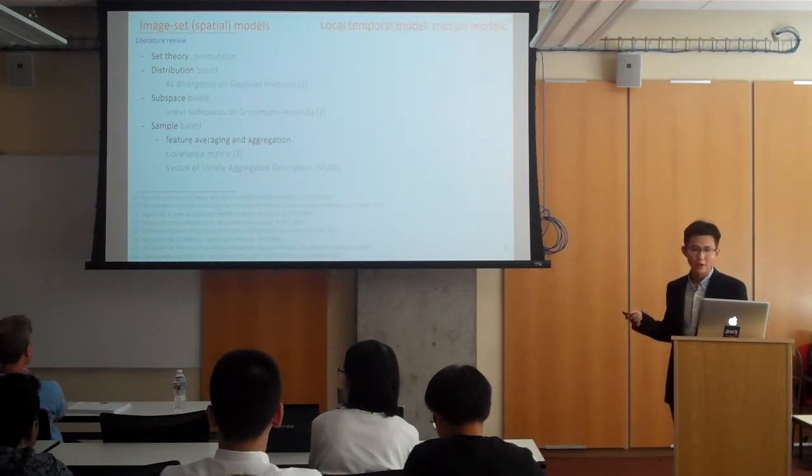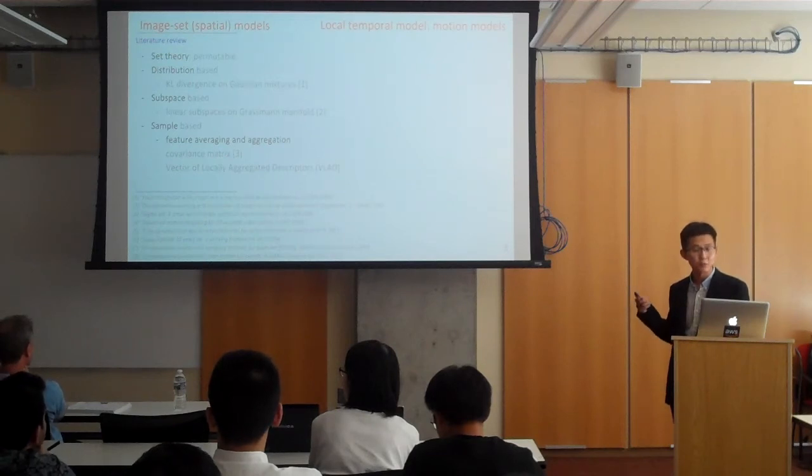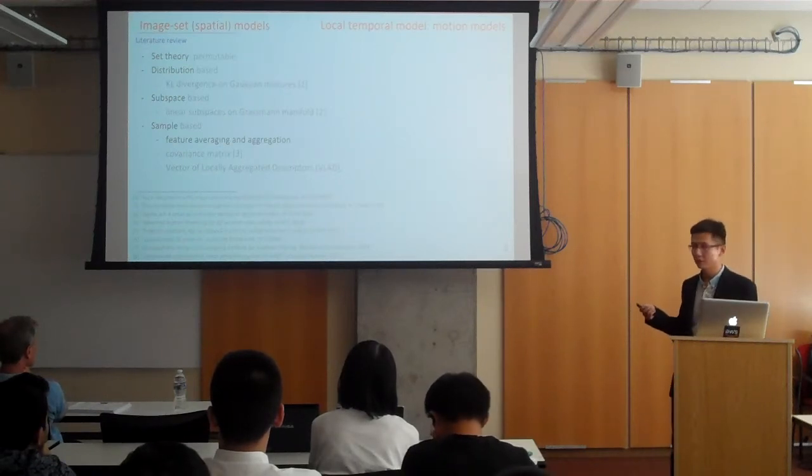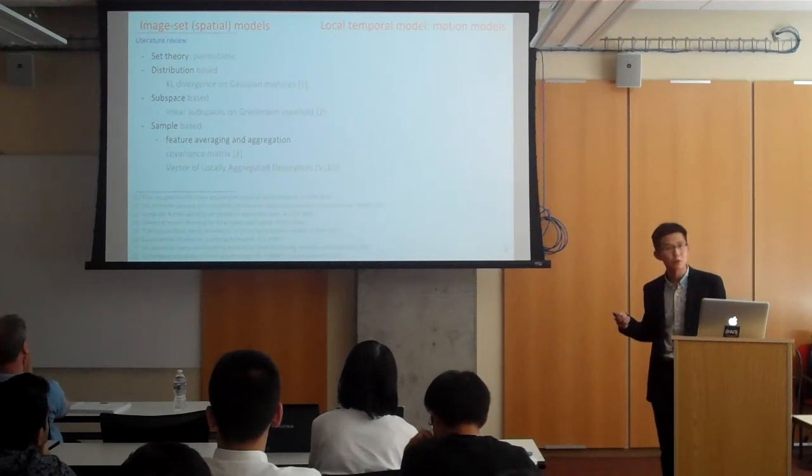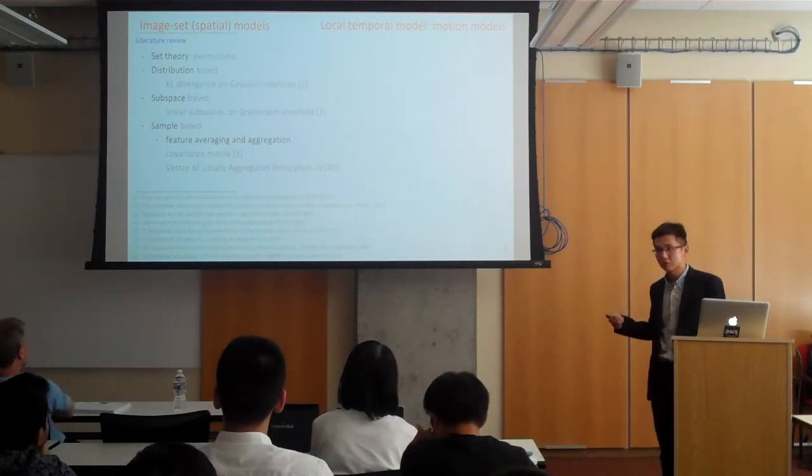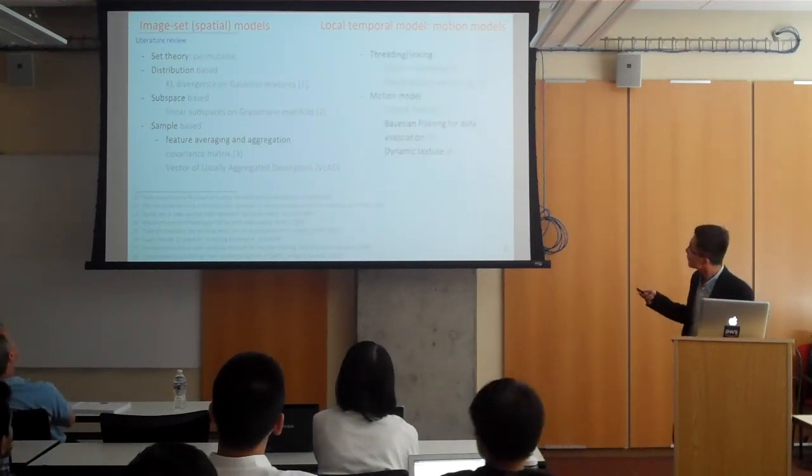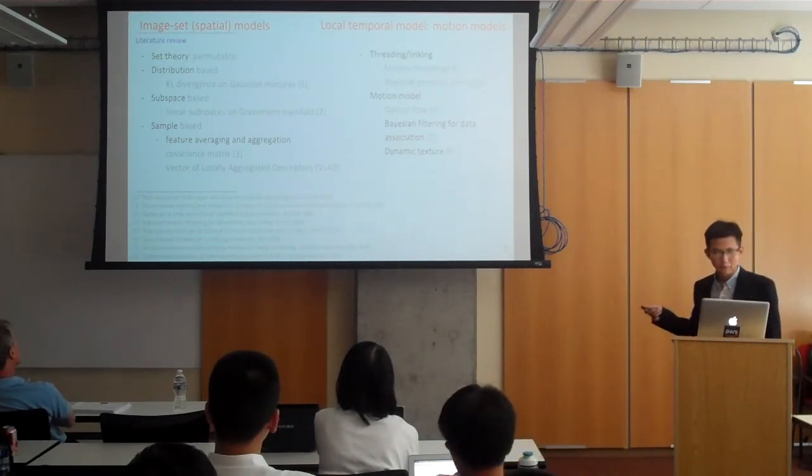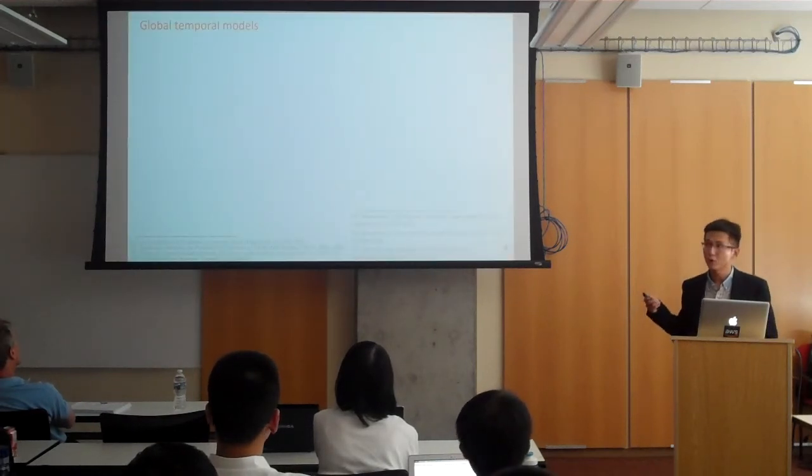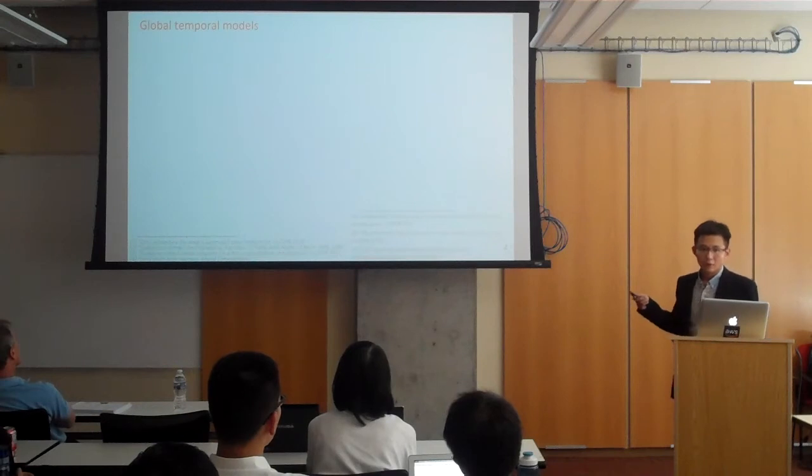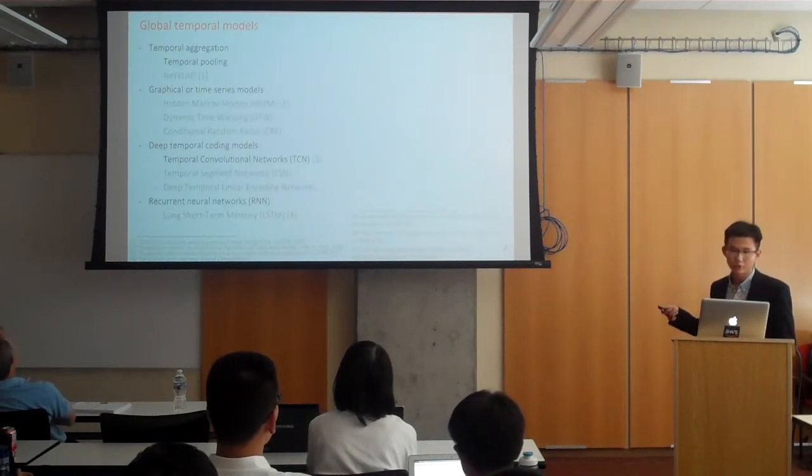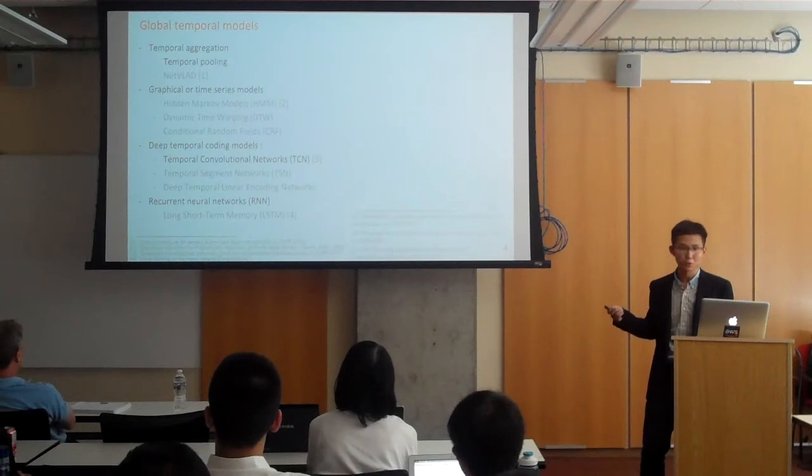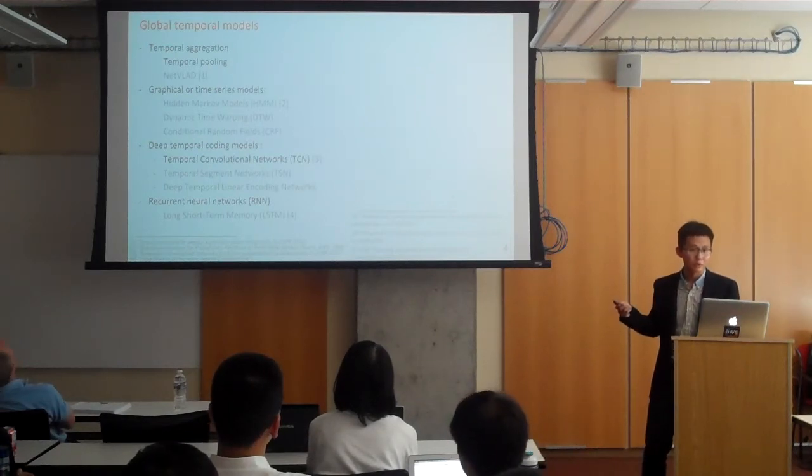For temporal models, one aspect is the local temporal models, such as simply computing frame difference or optical flow, feature and stereo matching, and estimating the motion for adjacent frames or your local temporal windows. And also, dynamic textures can be categorized into this type. Basically, we have one type is the threading and linking. The other type is more about tracking, migration, filtering for data association. The other aspect of temporal models is global temporal models. Typical examples are temporal pooling, hidden Markov models, temporal convolution networks, and the long-short-term memory networks. Many of those models are tested over time, mature, widely used, and well known. So I won't elaborate on them, but this is still an area where a lot of research is still going on.